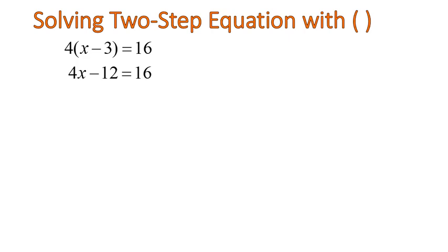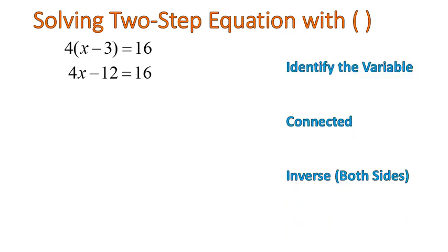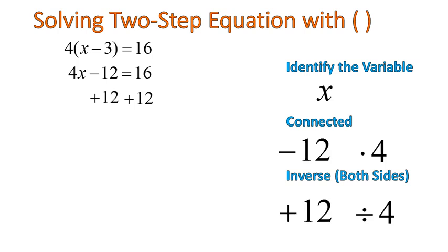Now we've got our basic two-step equation. We'll follow these same steps. My variable is x. I'm subtracting 12 and multiplying times 4, so I'm going to do the inverse of those operations. Hope I didn't go too quick there. I'll show you all the steps. I'm going to add 12 to the left side of the equation and add 12 to the right side of the equation. The positive and negative 12 cancel each other out. I'm left with 4x on the left, 28 on the right, because 16 plus 12 is 28.